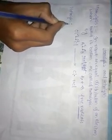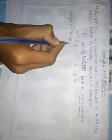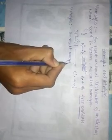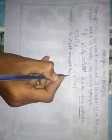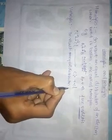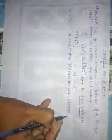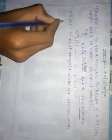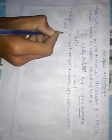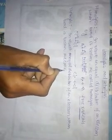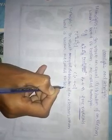Now we discuss about heterolysis. Heterolysis results in unequal distribution of an electron when a bond is broken — this is called heterolysis.